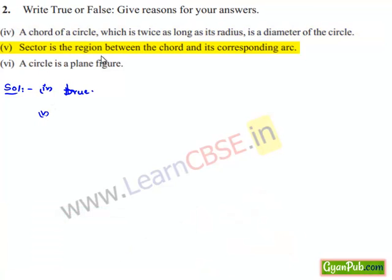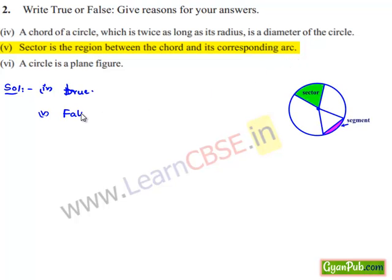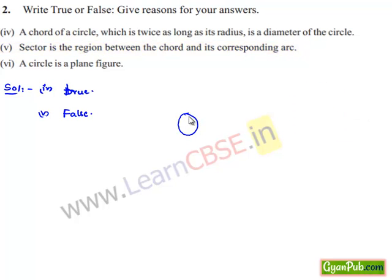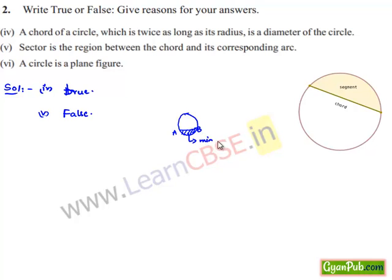Moving on to the fifth bit: sector is the region between a chord and its corresponding arc — that is false. A segment is the region between a chord and either of its arcs, but it is not a sector. If we consider a circle with chord AB, the region between AB and the arc is called the minor segment, and the other remaining part is known as the major segment.